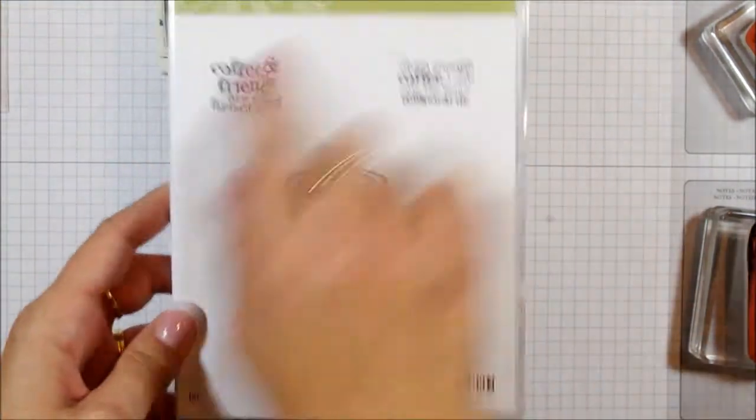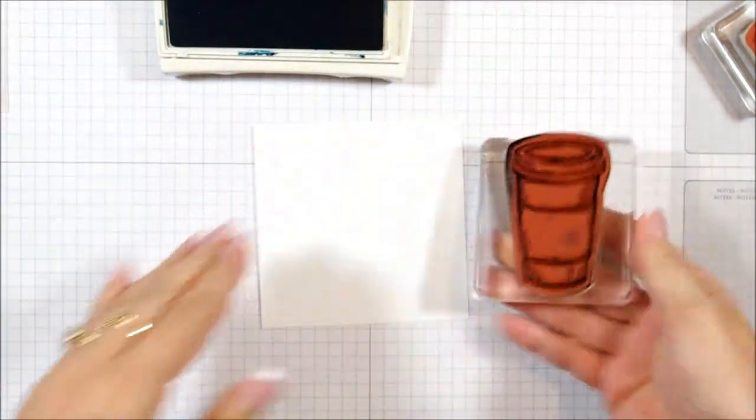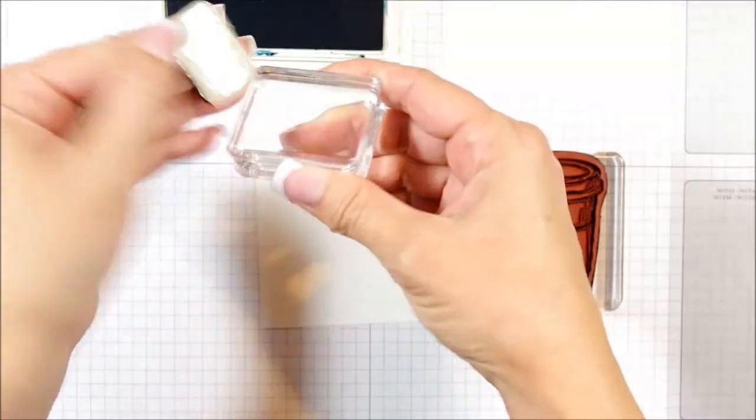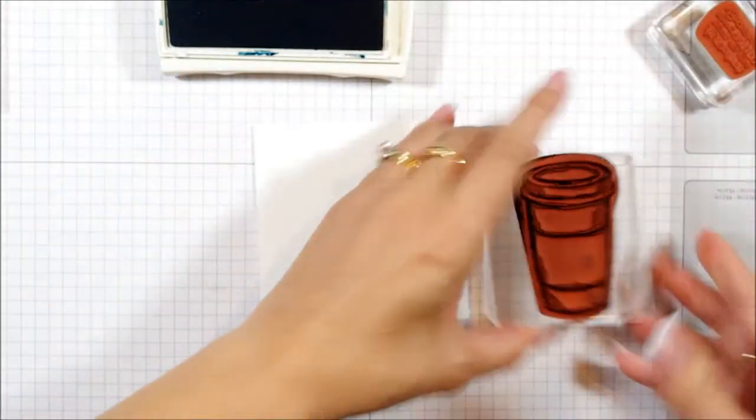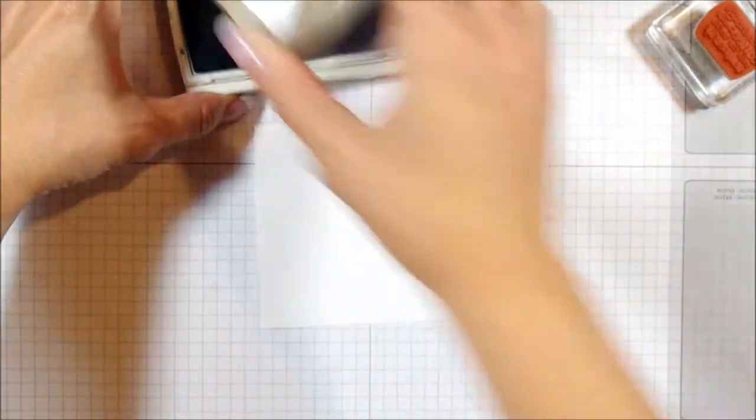For this example, I'm going to use a cling stamp set. And what that means is that you actually can reposition these on and off. So that's where this imaging sheet will come in handy.